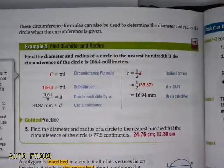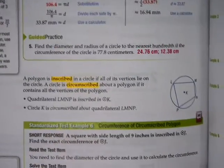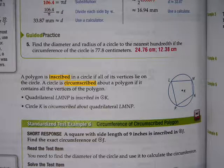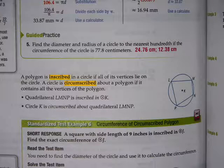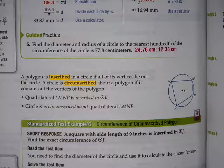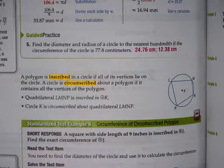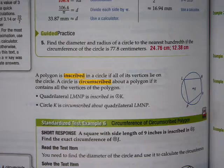So what that means is every single vertex of the polygon is a point on the circle. A polygon is inscribed in a circle if all the vertices lie in the circle. A circle is circumscribed about a polygon if it contains all the vertices of the polygon. So the polygon is circumscribed in. The circle is circumscribed about, circumscribed on the outside.